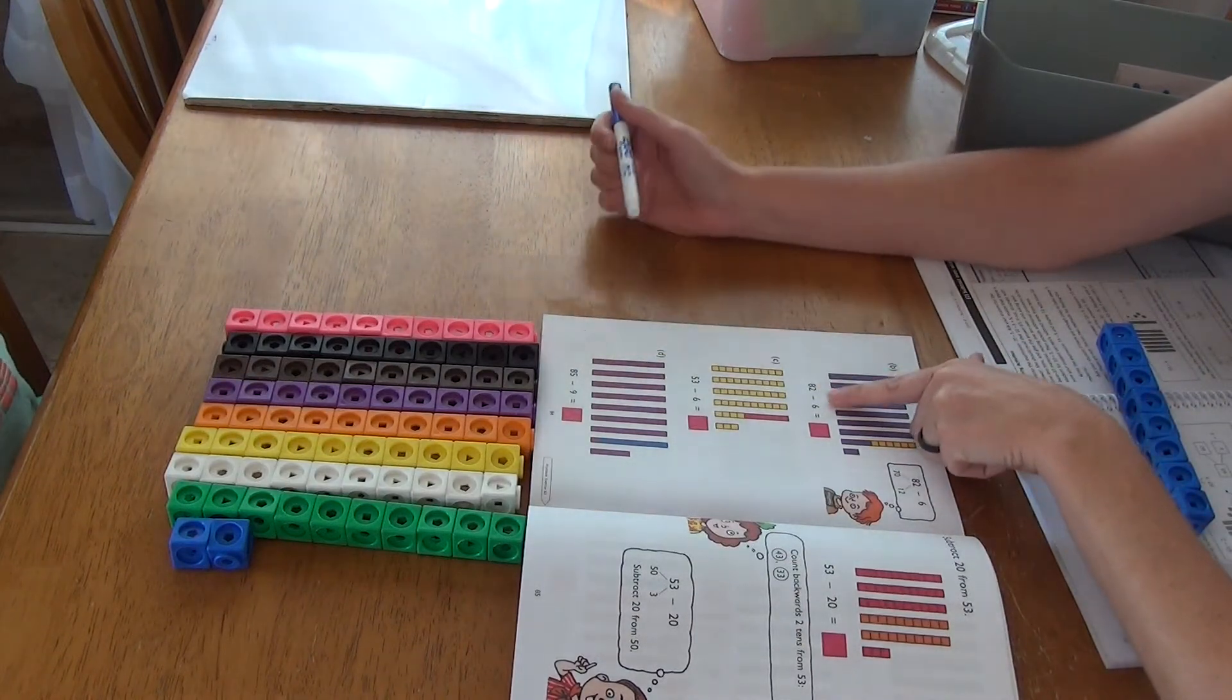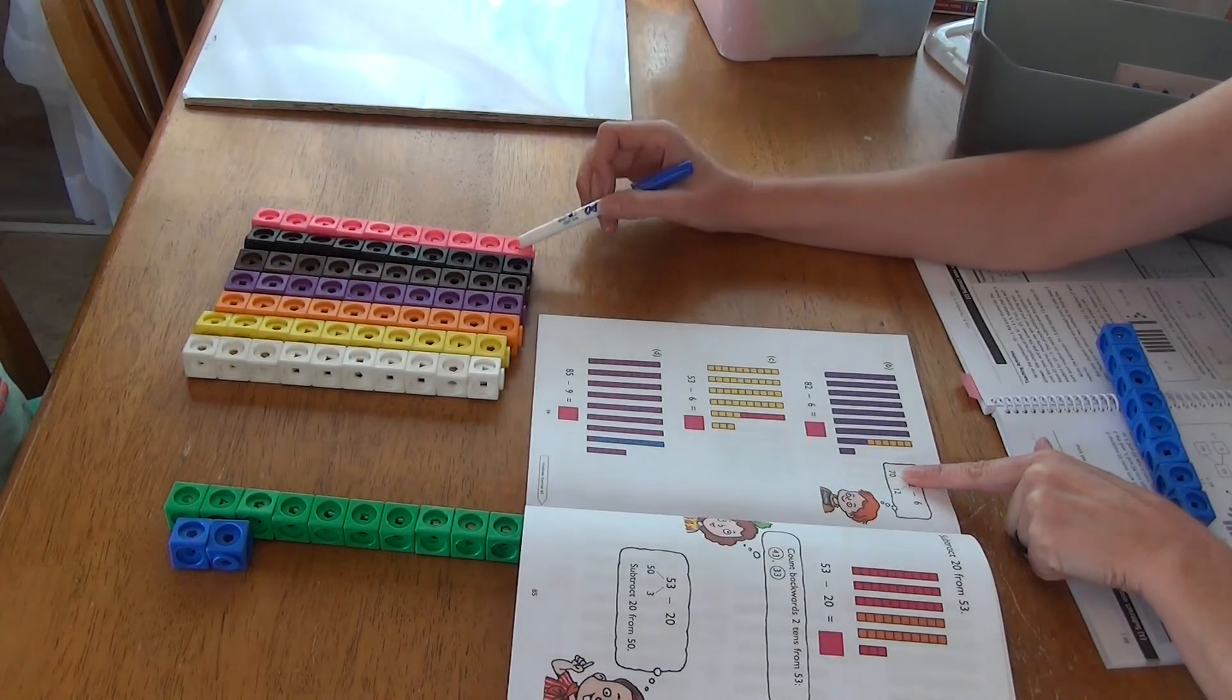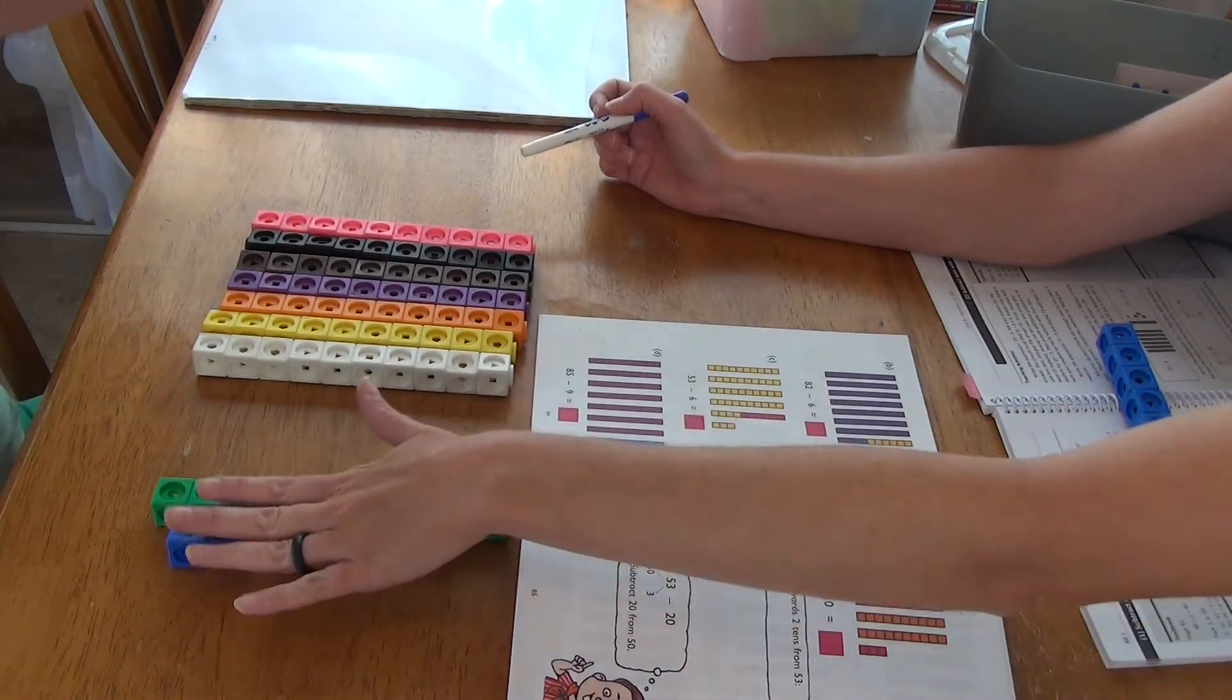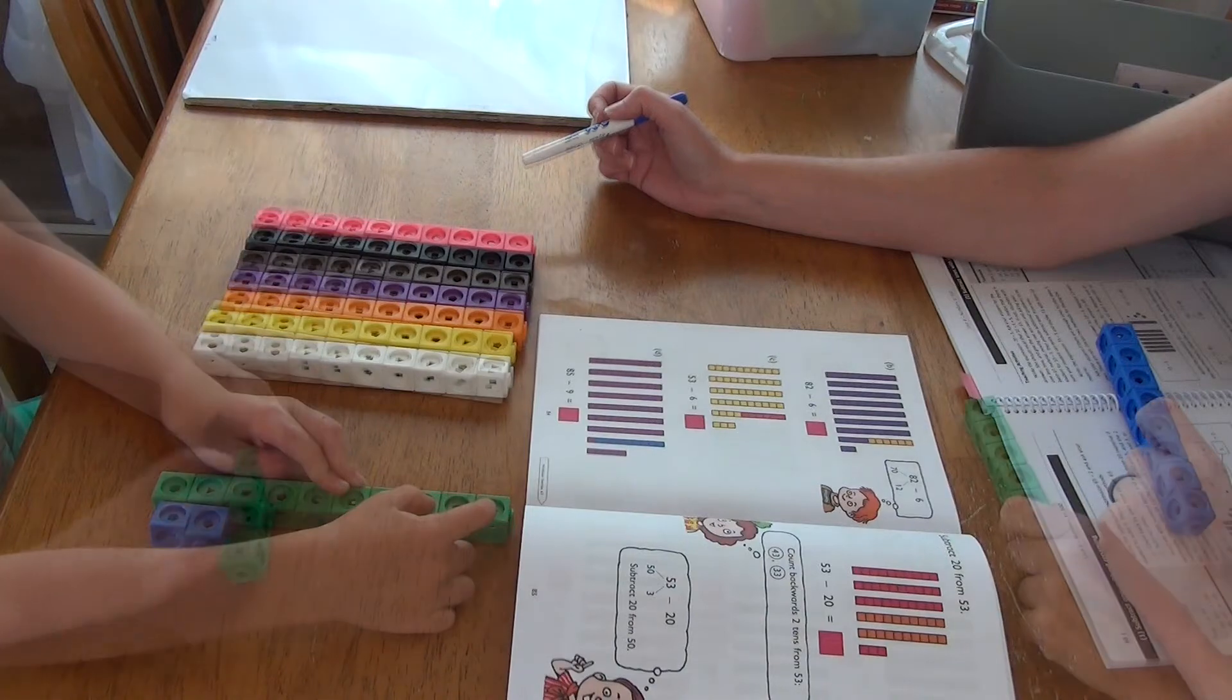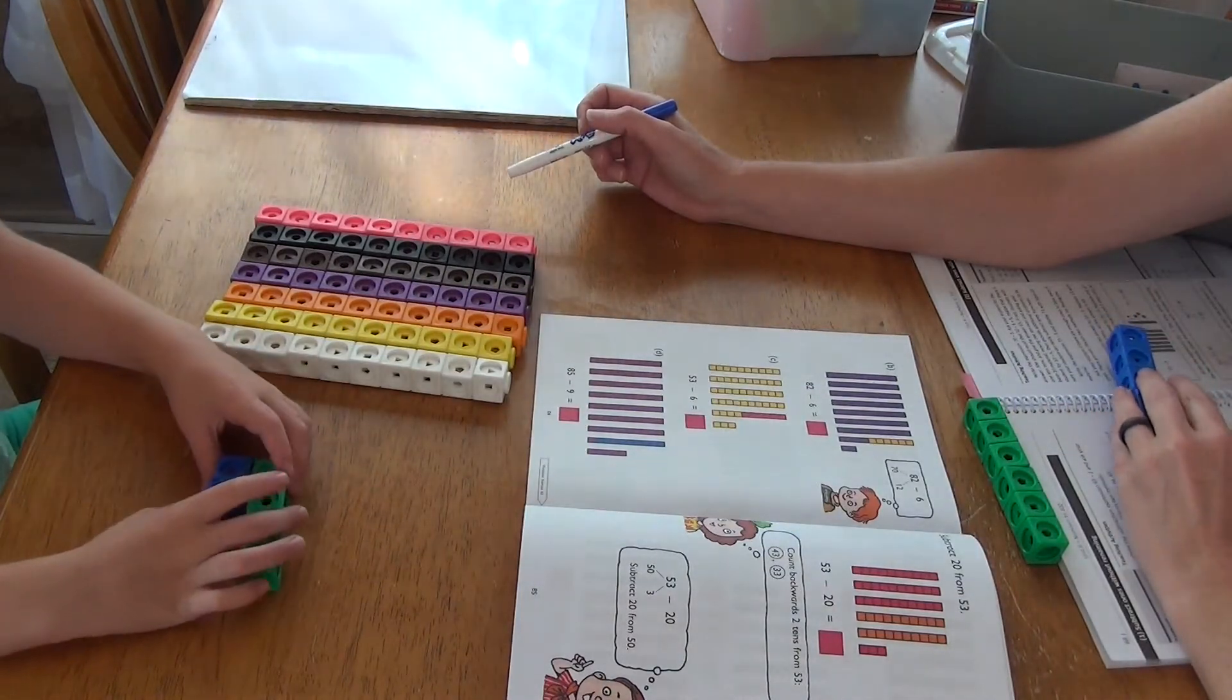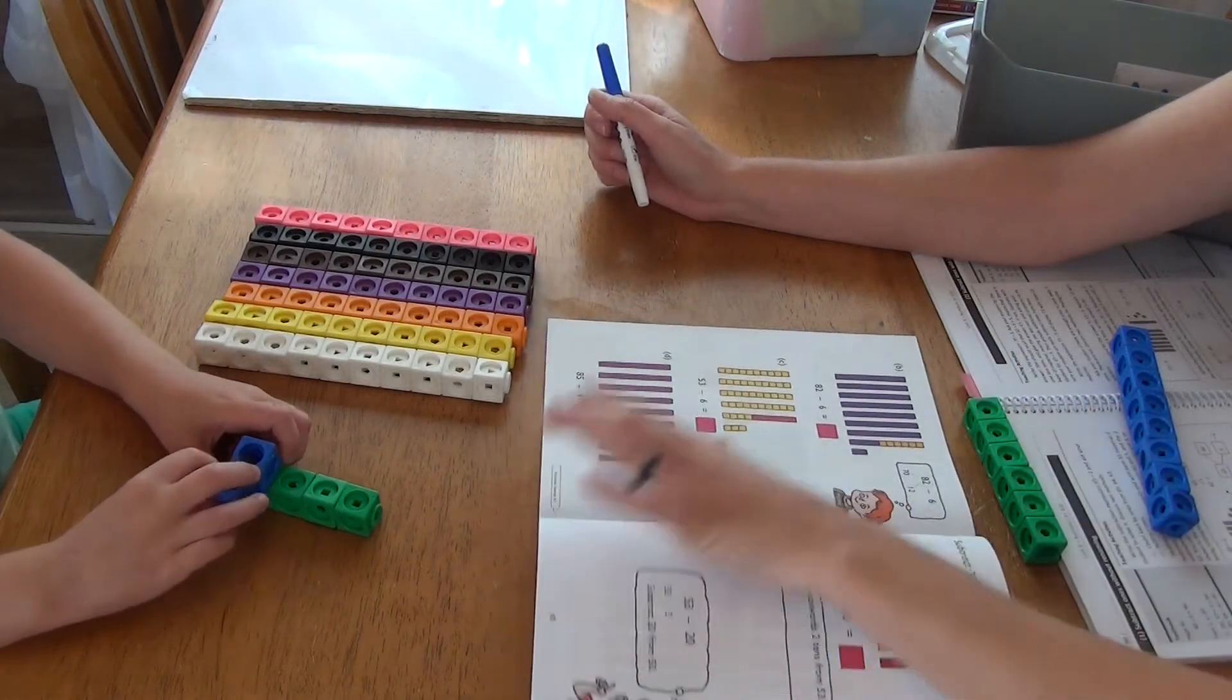So we have our 82 right here like our little workbook. When you are doing the Primary Math, you are doing this section of the textbook together. So you are working together. They don't get their independent work until the workbook. So this is the textbook. So we have 82 minus 6, okay? We're going to move these tens over like we see right here, right? How many tens do we now have sitting over here? Seven tens, which is 70.